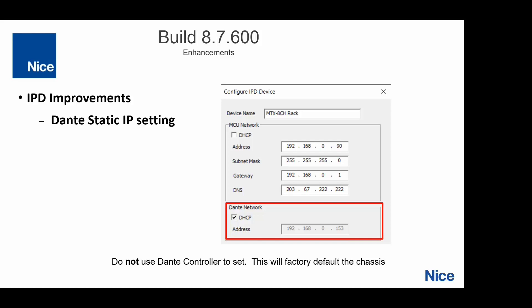Previously we had one ability to set a static IP for the MCU but let Dante do its own thing. Now we've given you the ability to set the Dante static IP from here as well. Some of you have used Dante Controller to set a static IP for the Dante network, but that is bad — don't do that. Using Dante Controller to do so actually factory defaults the chassis and creates a lot of problems. This is a much cleaner, faster, and better way to do it.